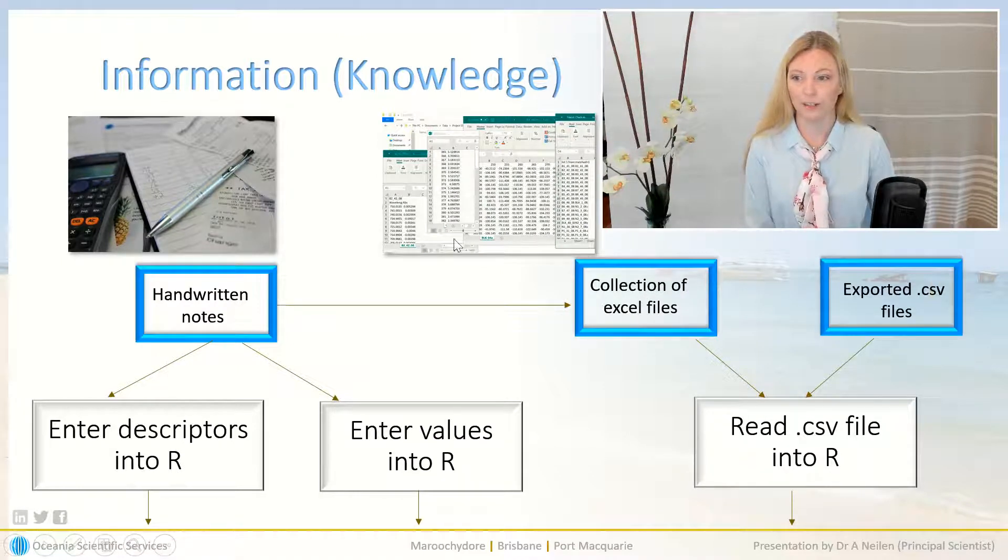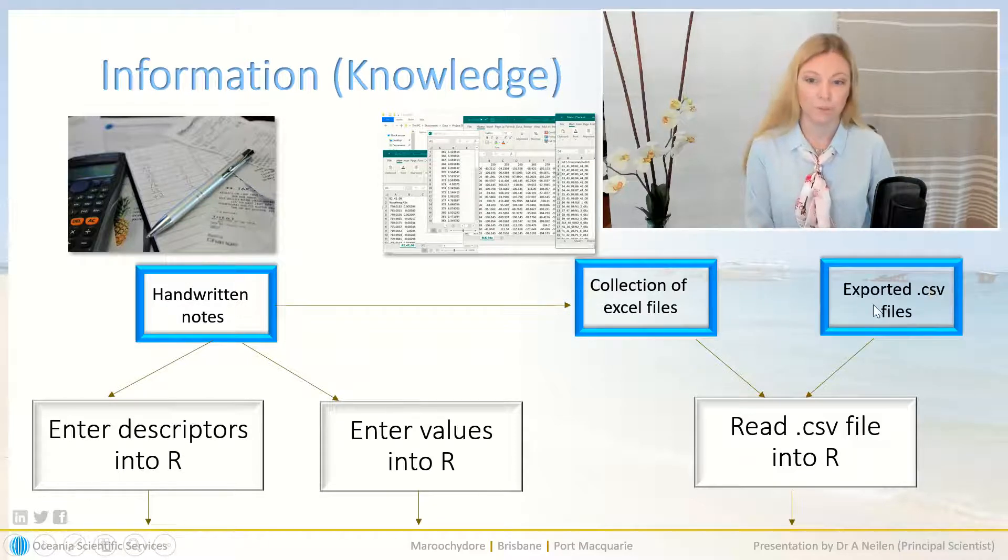So as you can see from this flow diagram we can have handwritten notes, collected Excel files, exported CSV files and they may all enter into R using different codes. Now this part matters because how you're importing your data into R will change. Let me give you a little example.